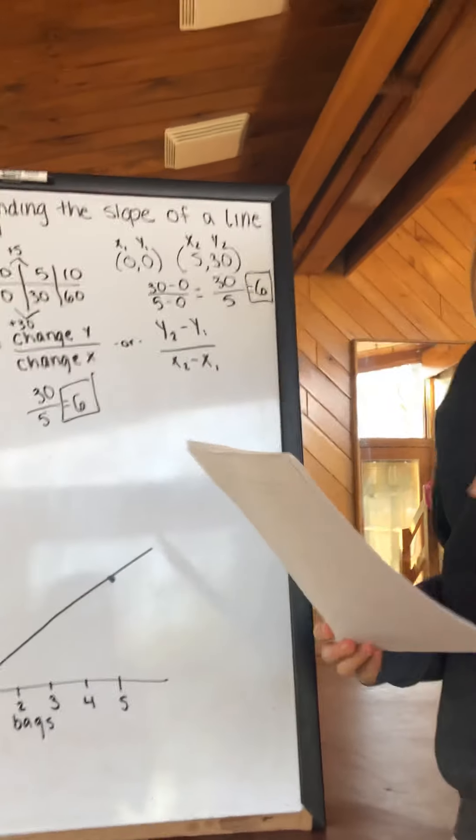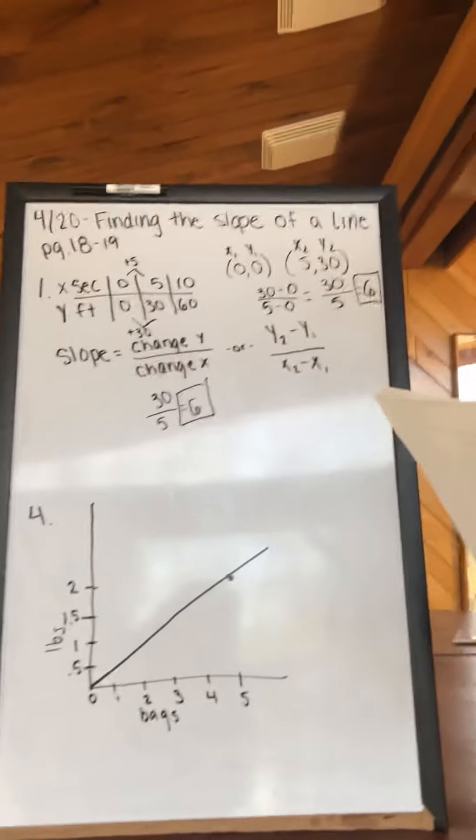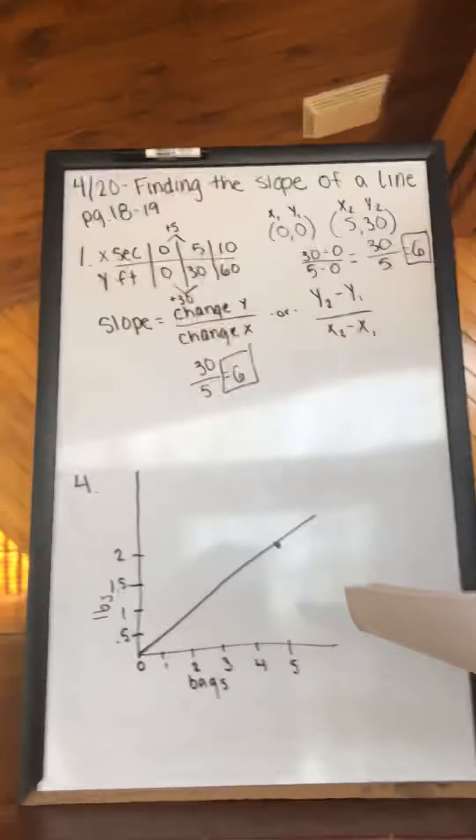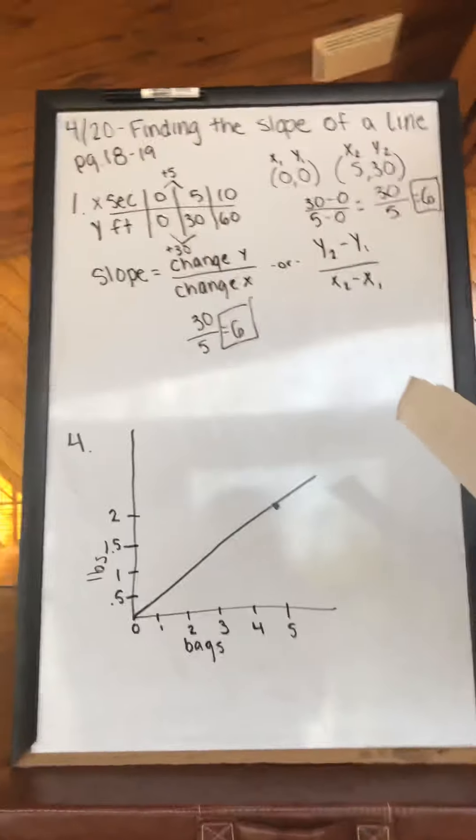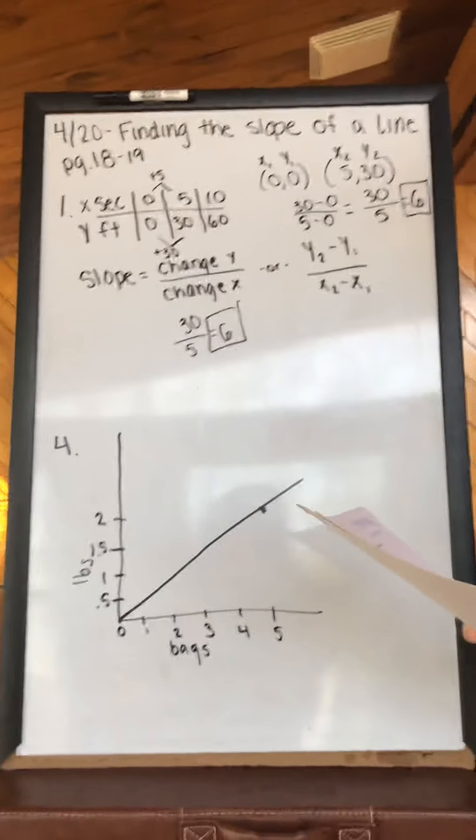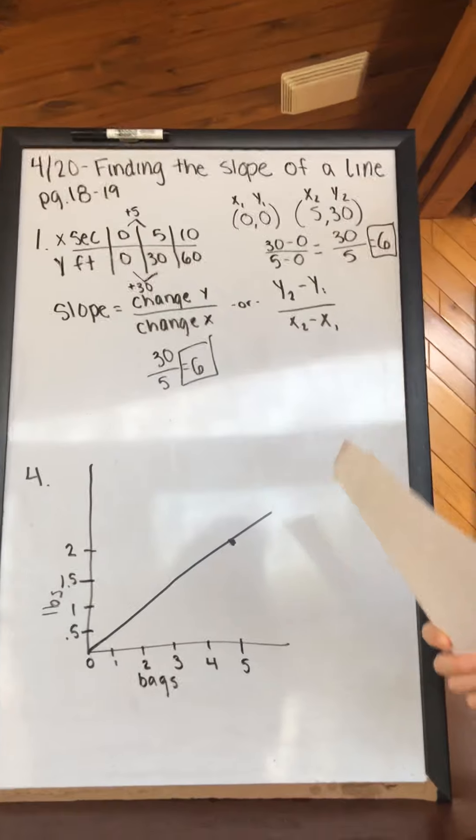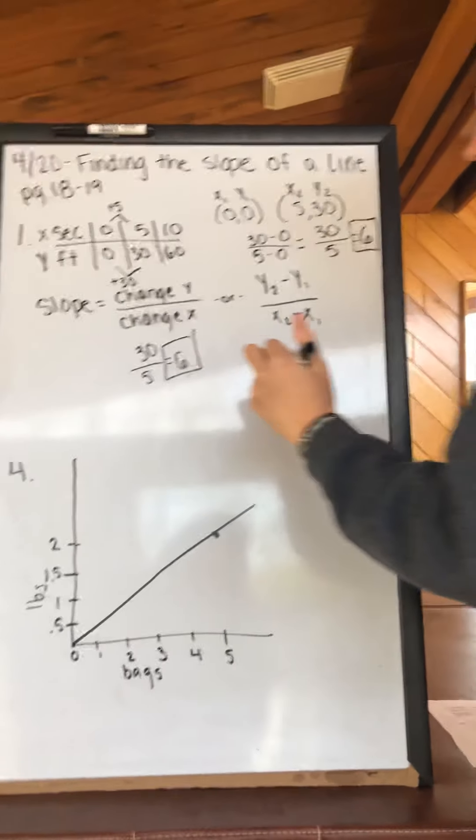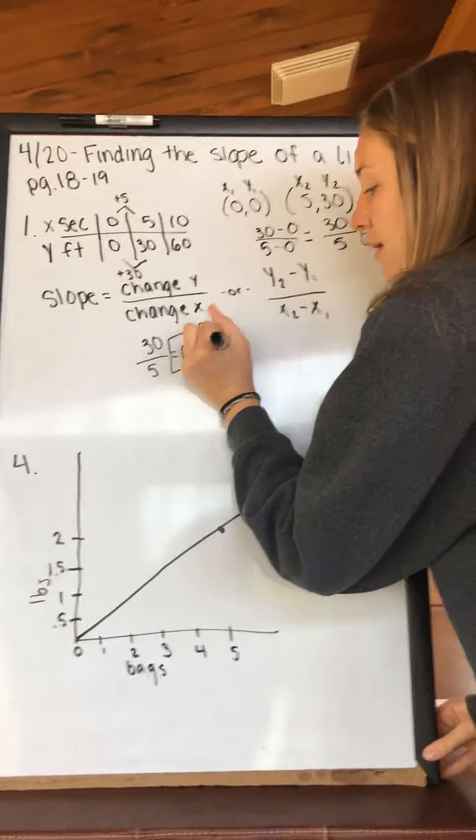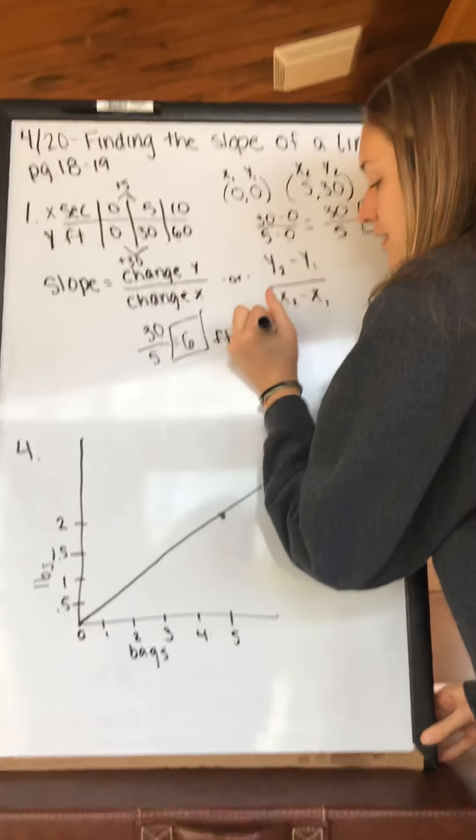The other part of this question is to state what the slope represents. Remember the slope is per unit. So in this problem we have feet per second. Keywords for slope are 'per' and 'each.' So for this one we have 6 feet per second.